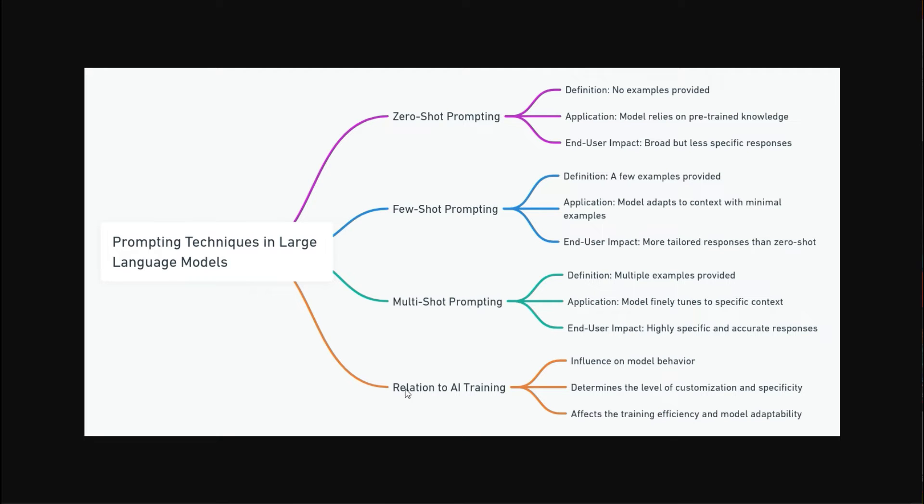And then down here at the bottom, we have this relation to AI training. So what does that do? It influences the model behavior, determines the level of customization and specificity, and affects the training efficiency and model adaptability.